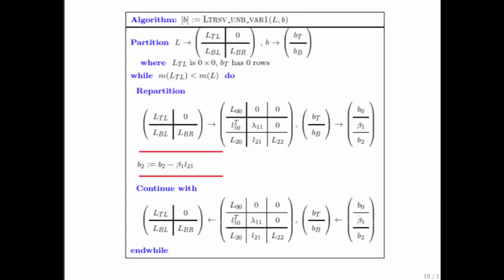This then motivates the following algorithm. We march through the matrix L, and we march through the right-hand side b. And at every step, all we have to do is an axby, where we take the current element of b, multiply it times this part of L, subtract that off of b2, and we move on.